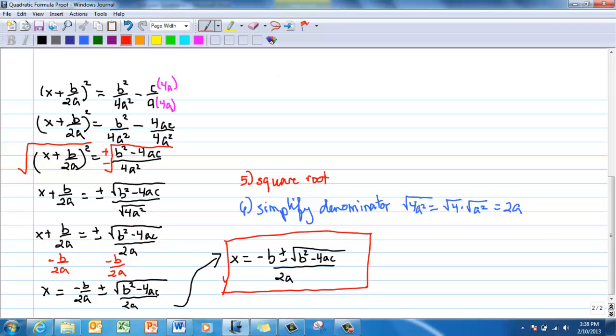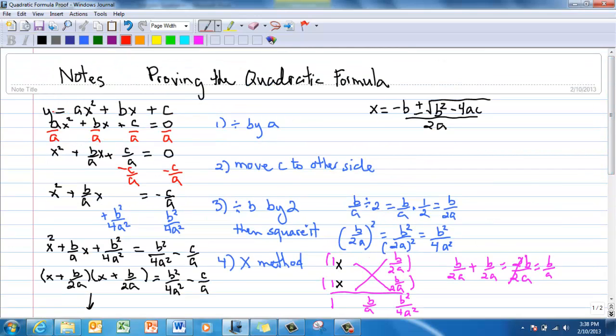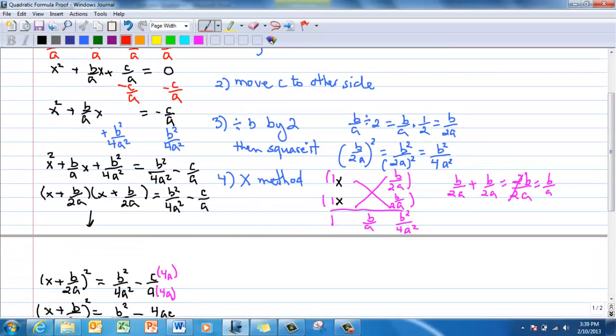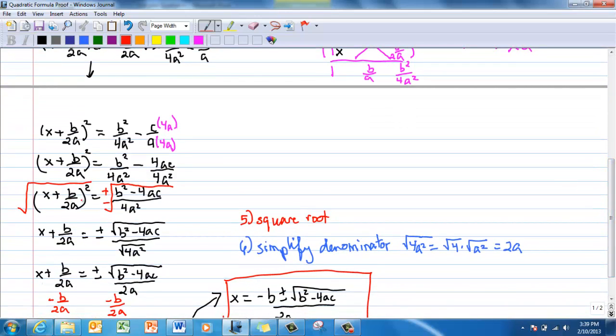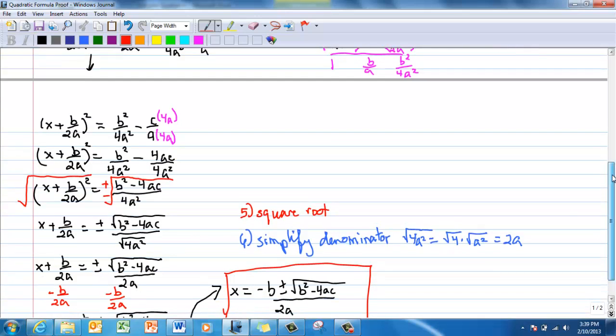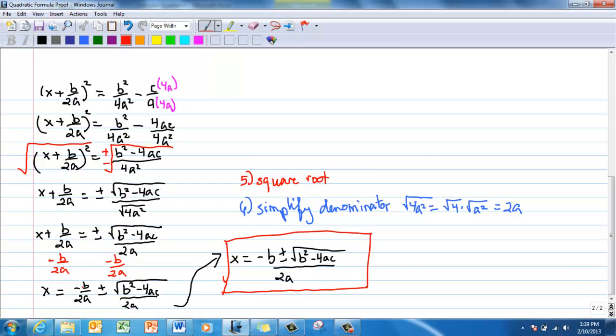So I just want to review the steps. The first step is make sure y is equal to zero and put it on the right hand side. Divide everything by a. Move the c number to the other side. And take the b term. Divide it by 2 and square it. After that, you x method. After that, you have the number of rates to the square power. Change the denominator to be the same so that you can add those two fractions. Then you do square root everything. You simplify the denominator. And you just isolate x and you're done.